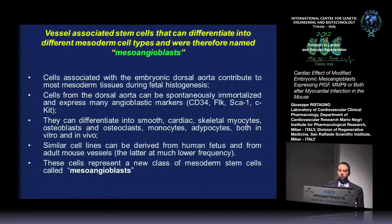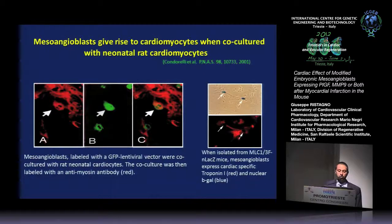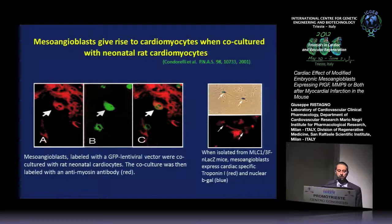They can also differentiate into most of the mesothelium tissue — into smooth cardiac skeletal myocytes, osteoblasts, osteoclasts, adipocytes, etc. It has been already shown that when they are co-cultured with neonatal rat cardiomyocytes, they can differentiate into cardiomyocytes. Here you can see the co-staining for myosin and GFP and also the co-expression of beta-gal and troponin I.